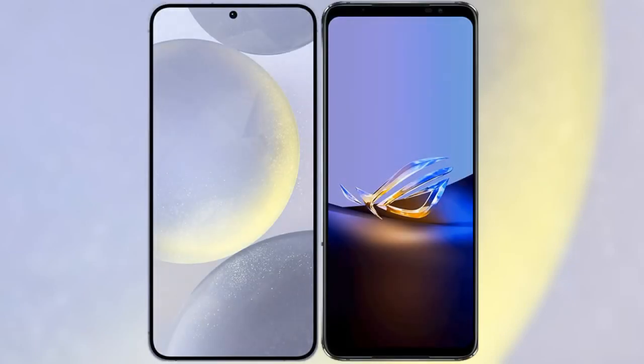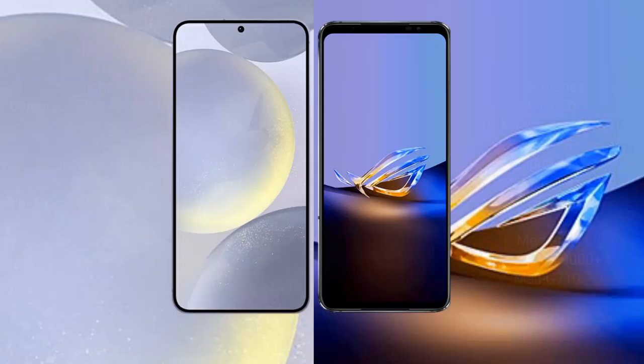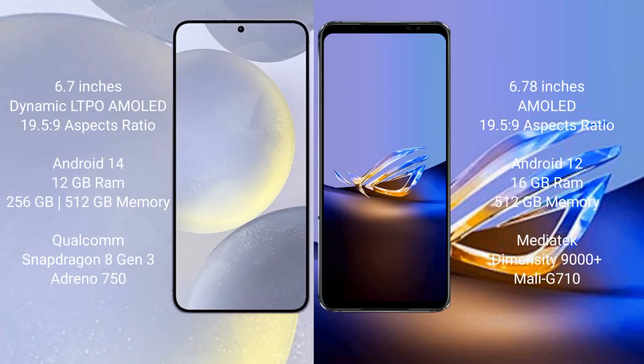I will compare the new Samsung Galaxy S24 Plus with the ASUS ROG Phone 6D Ultimate. The Samsung Galaxy S24 Plus comes with a 6.7-inch Dynamic AMOLED display with an aspect ratio of 19.5:9. The ASUS ROG Phone 6D Ultimate comes with a 6.78-inch AMOLED display and an aspect ratio of 19.5:9.